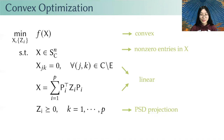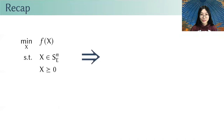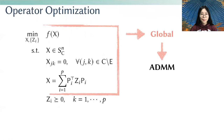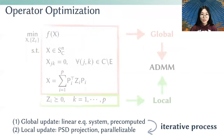To recap, we formulate the spectral coarsening problem as a convex optimization, where we use chordal decomposition to decompose a large sparse PSD constraint into several small ones. We then efficiently optimize the problem using ADMM, the alternating direction method of multipliers. In ADMM, we iteratively optimize the global variable X and the local variables Zi. Each global update is a linear solve in X and can be pre-computed, and each local update is a set of small PSD projections that can be parallelized.